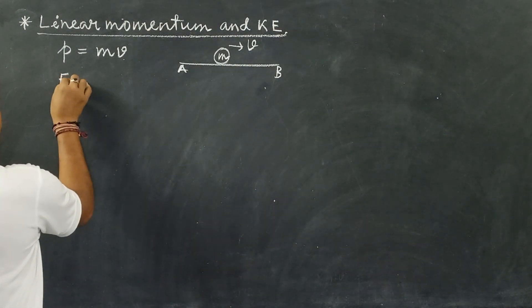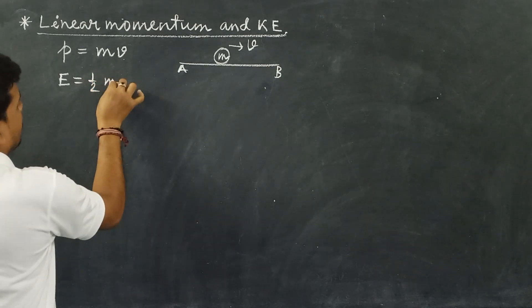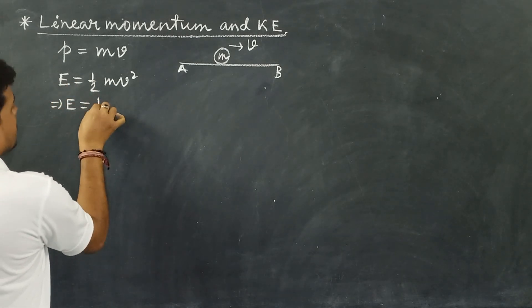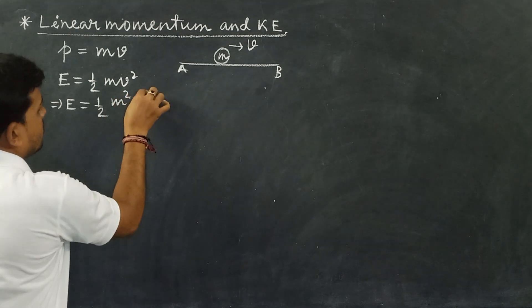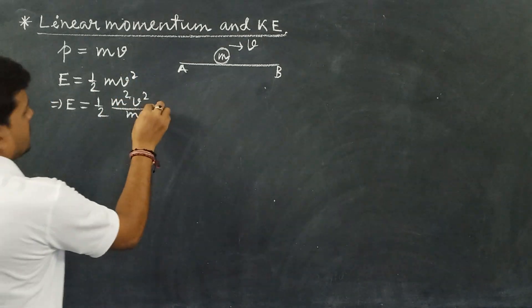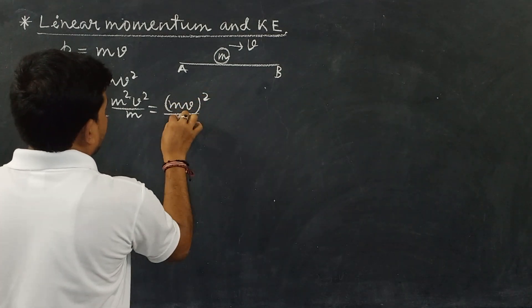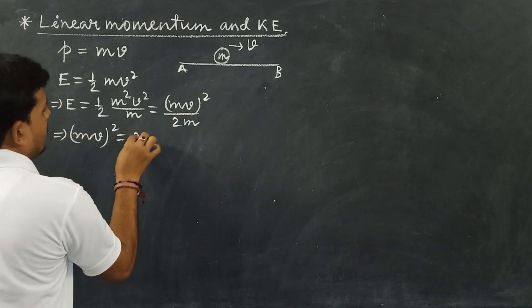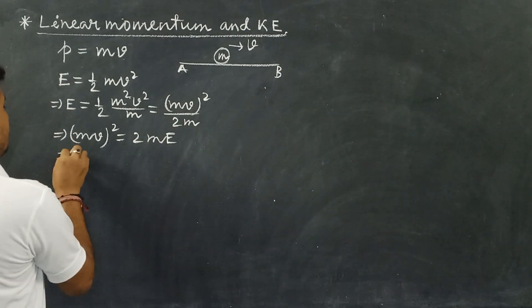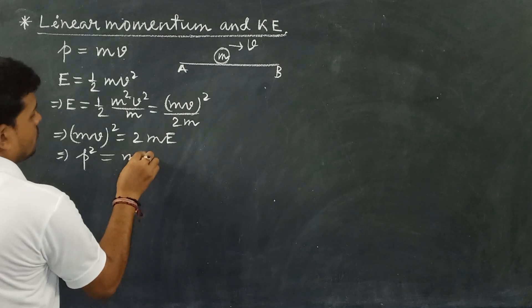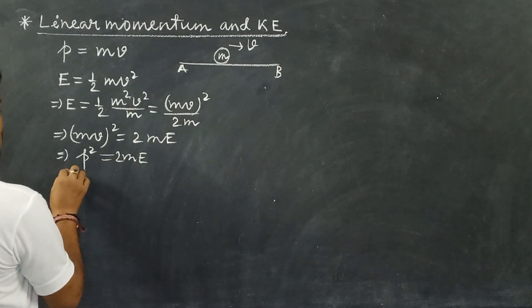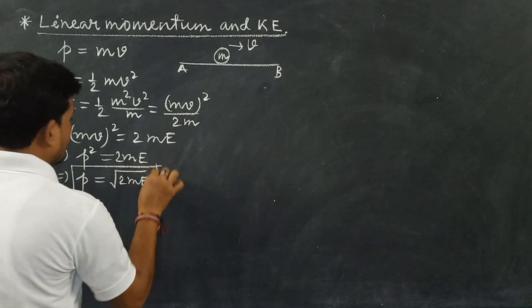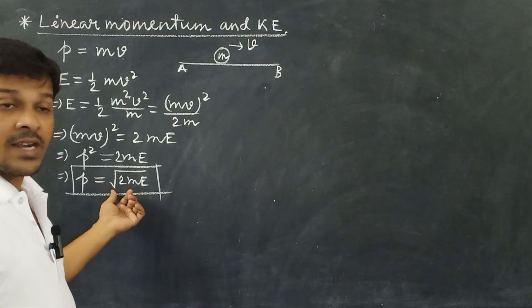Another relation is kinetic energy, capital E, equal to half mv square. There is a standard relation — kinetic energy E equals half of m squared v squared divided by m, which equals (mv) squared divided by 2m. So mv squared equals 2mE, meaning linear momentum squared p squared equals 2mE, or p equals root over 2mE. This is the standard relation between linear momentum and kinetic energy of a body.